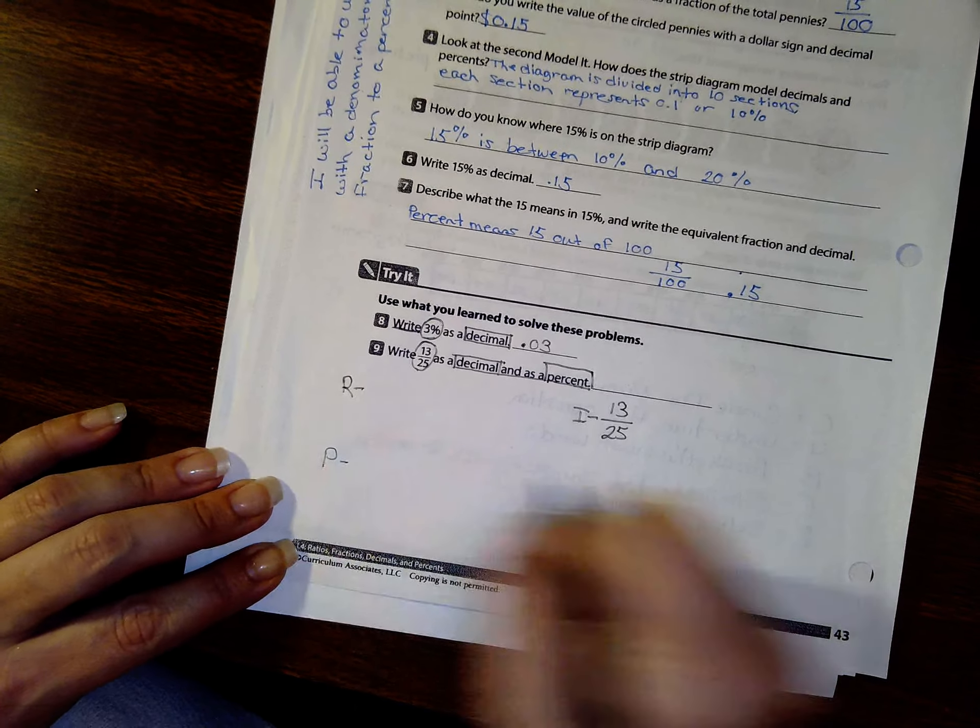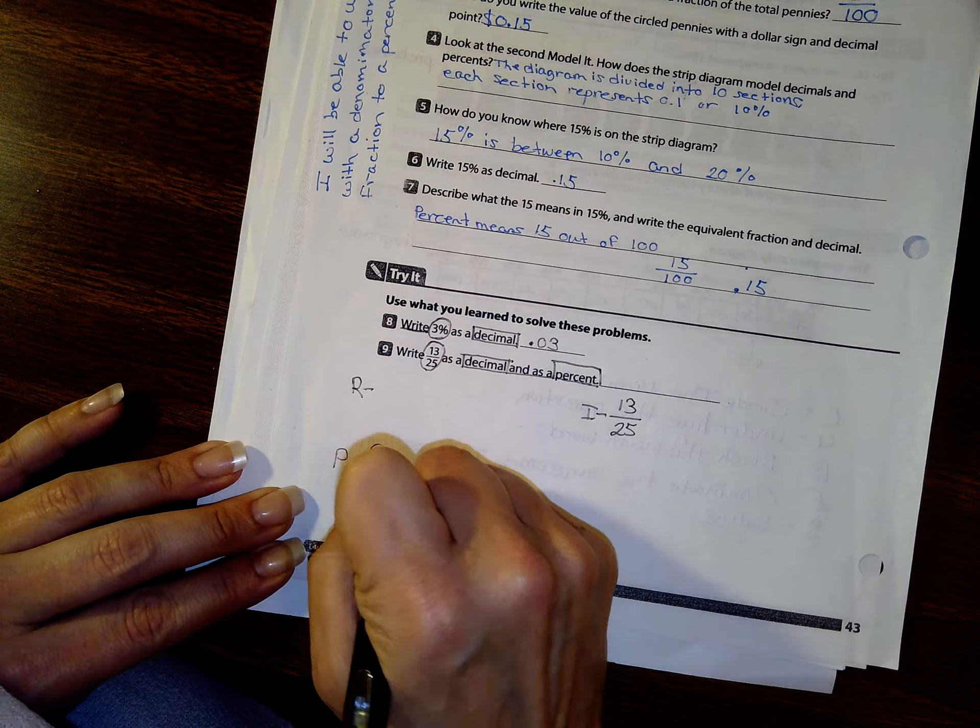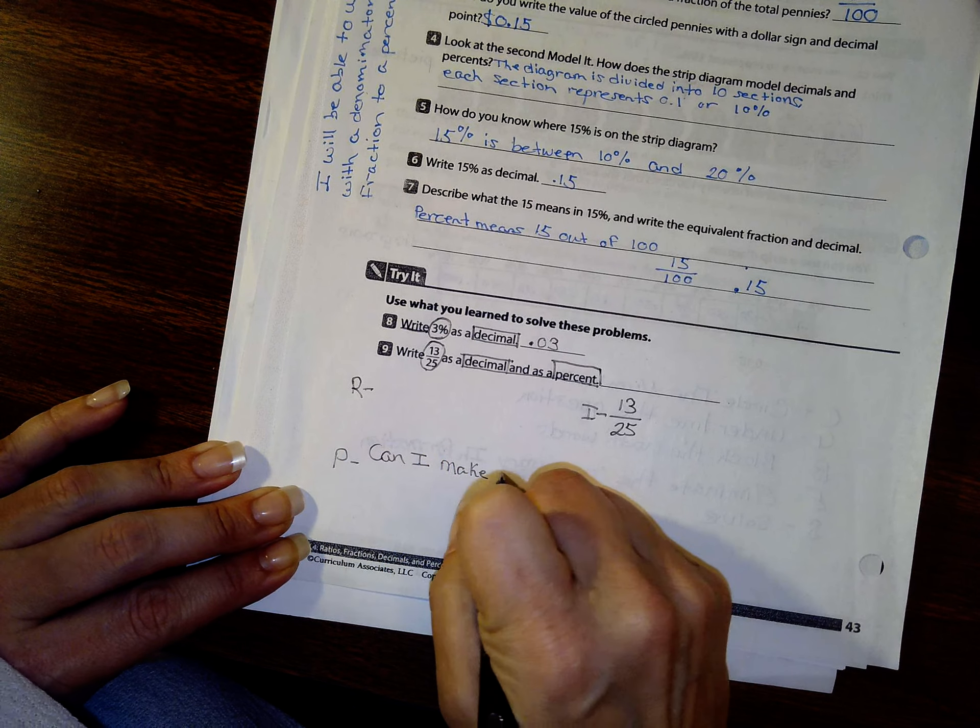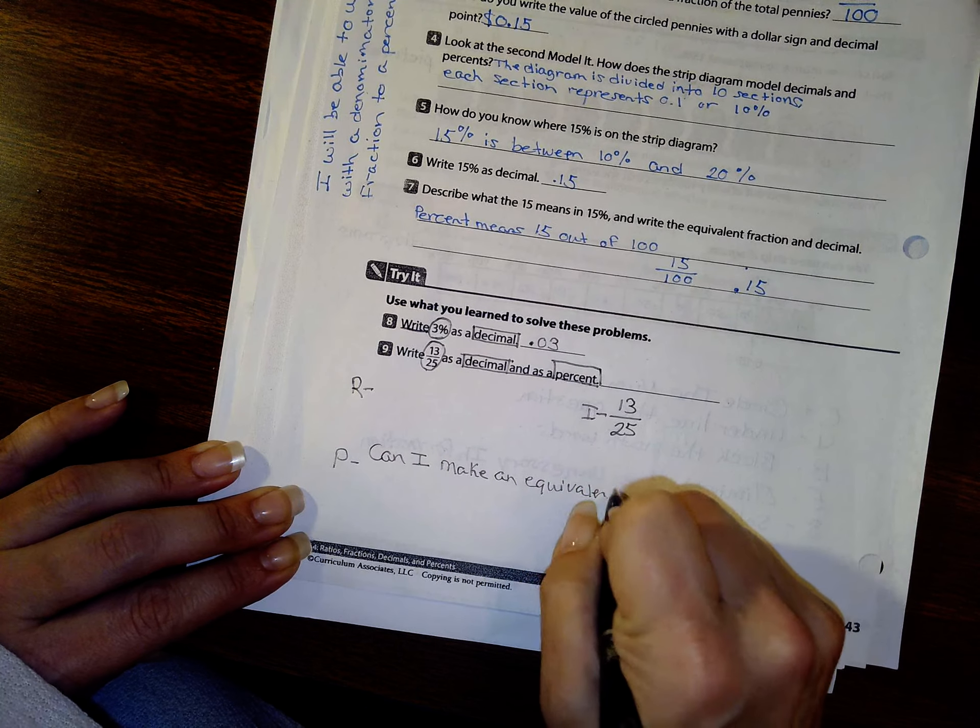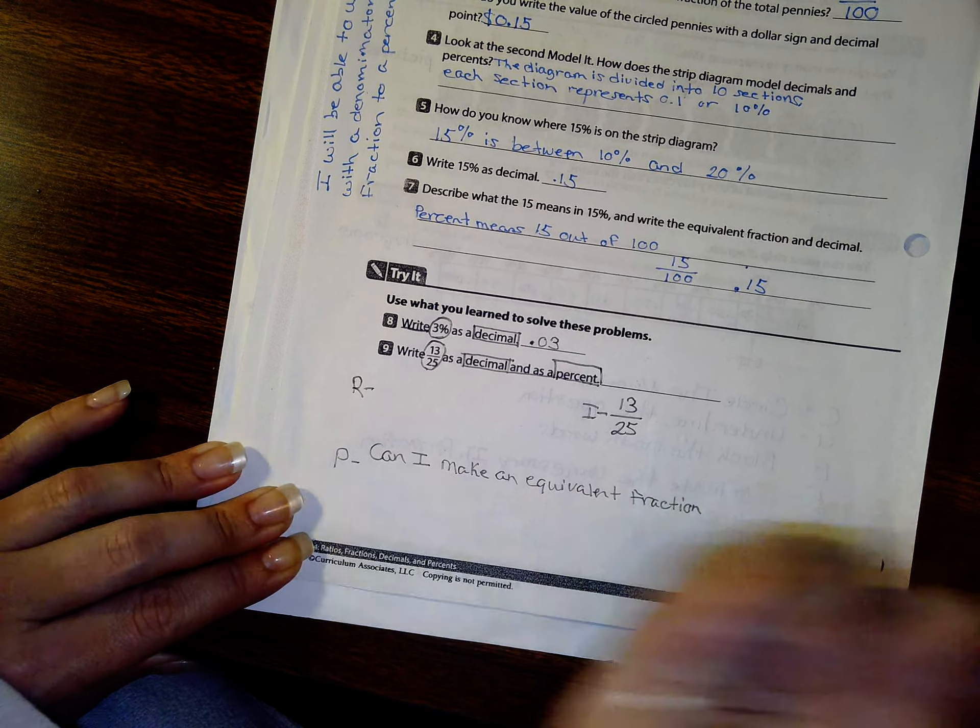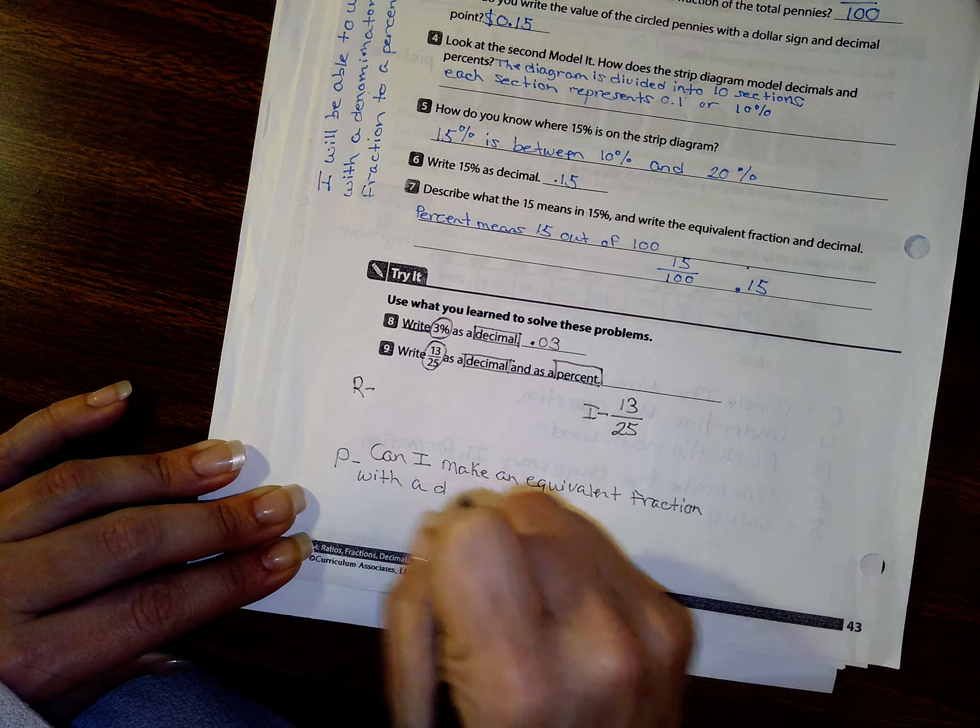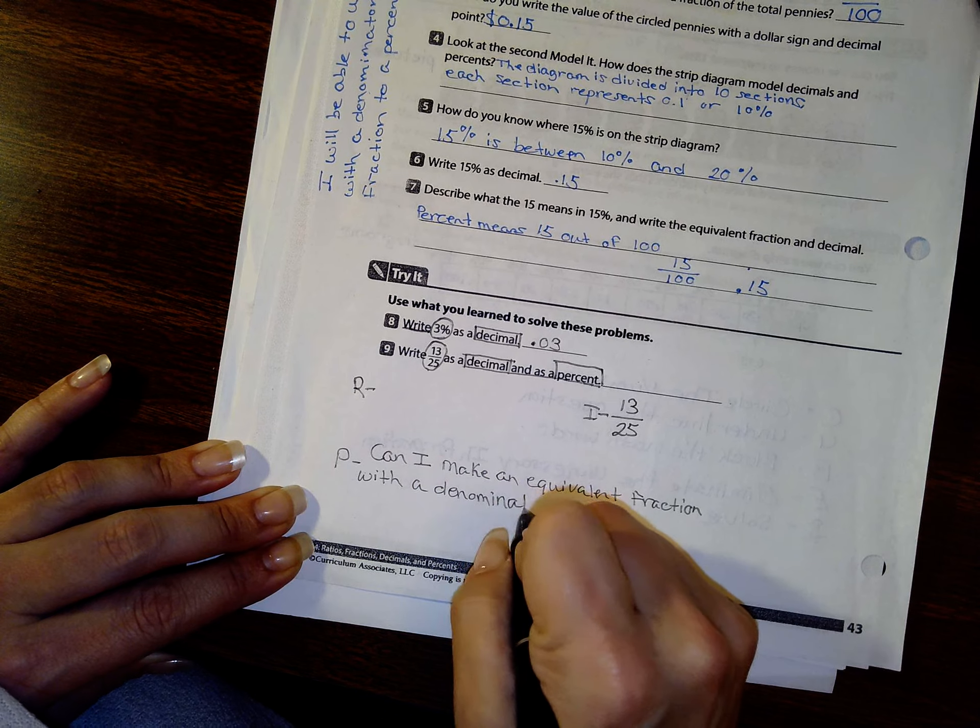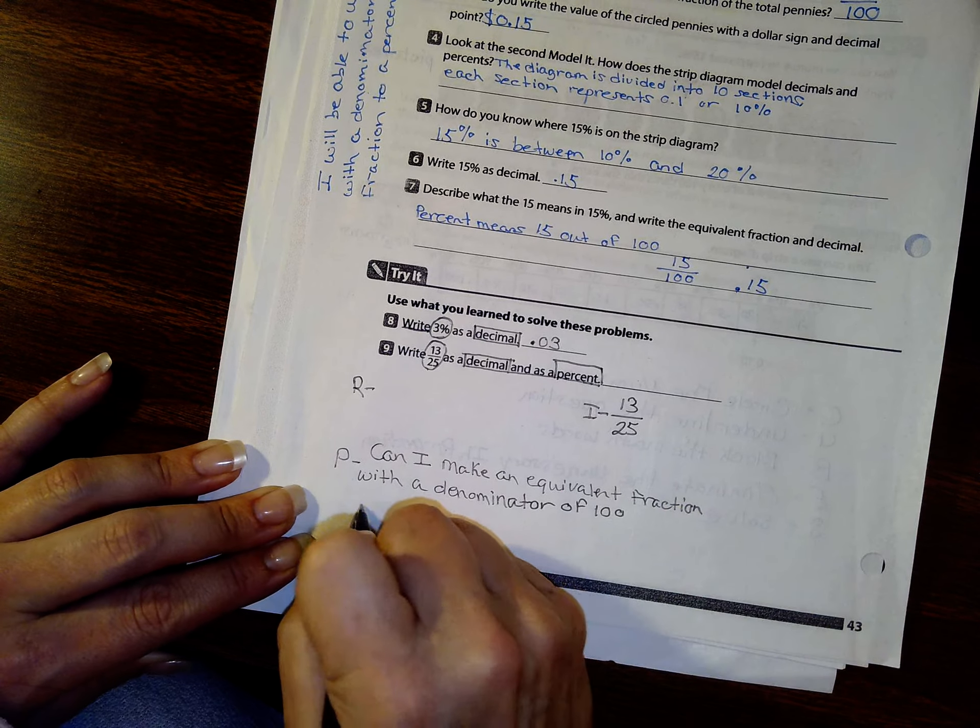My plan is to see if I can make an equivalent fraction of 100. So I need to do my fact family, right?